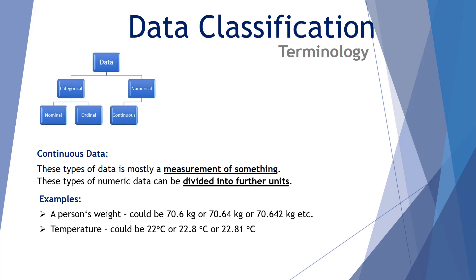Likewise, temperature. It is continuous data. It could be 22 degrees or it could be 22.8 or it could be 22.81 degrees. It just depends again on the precision of the measuring device. There's infinite possibilities of measurement. That is continuous data. In both examples, the data can be measured to a range of precisions.